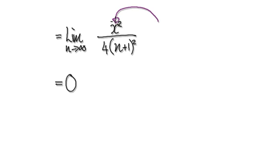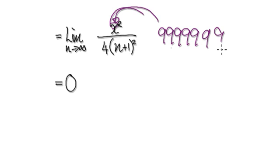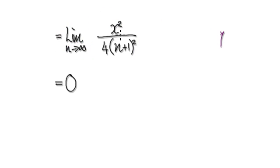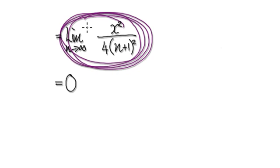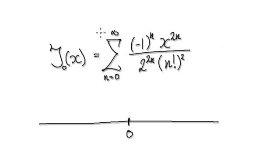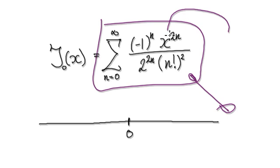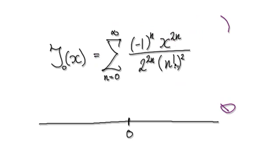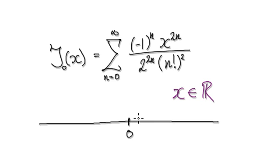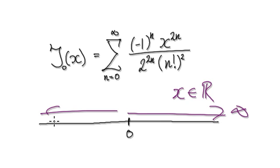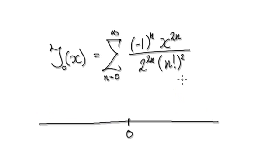The limit will always be zero no matter what value of x you put in. Even if you put a very large number into x, as n tends to infinity the overall result is zero. This means the series will always converge for any value of x. So the domain for this function is x belongs to everything on the real number line, and the radius of convergence is infinity.